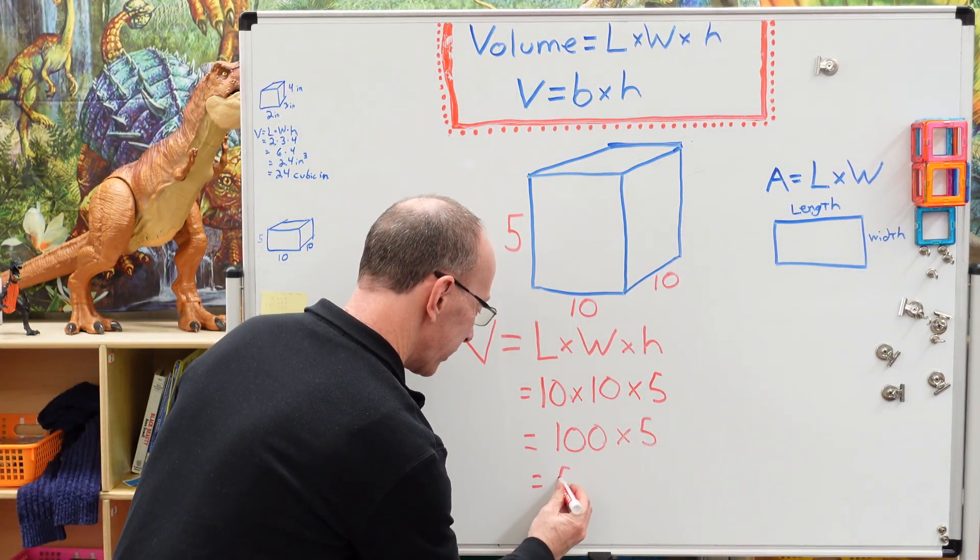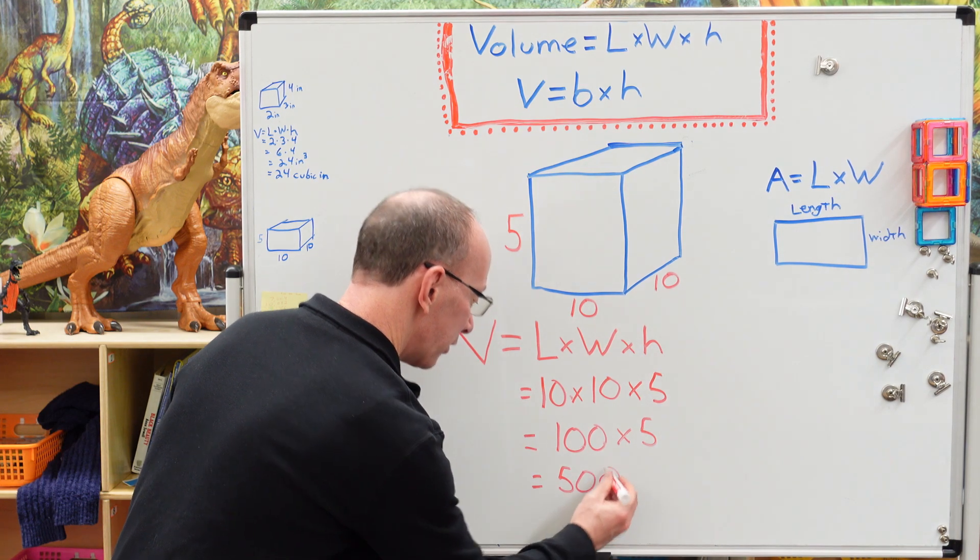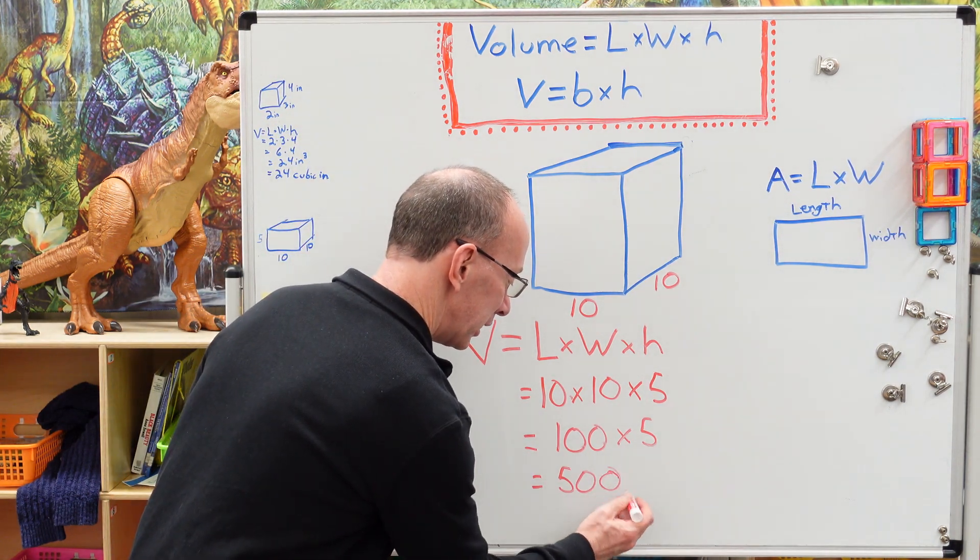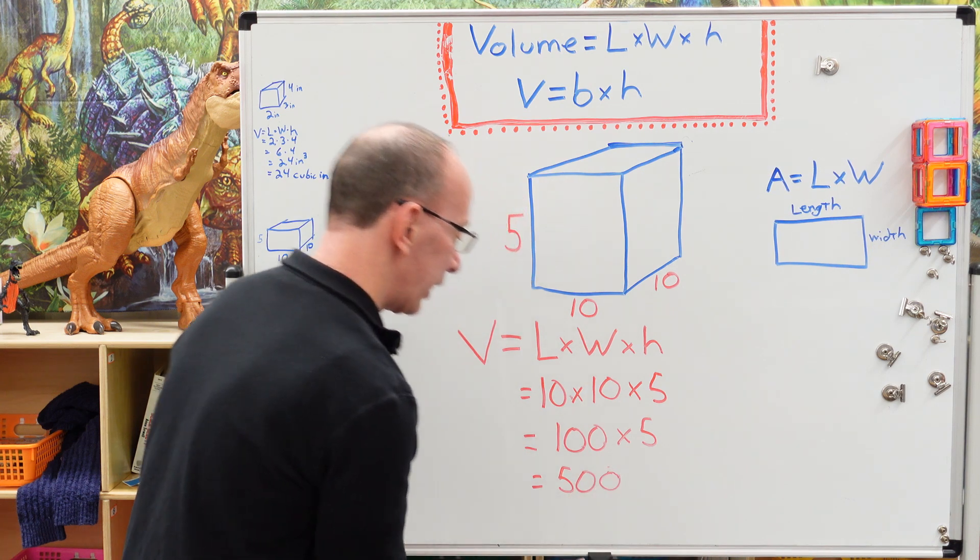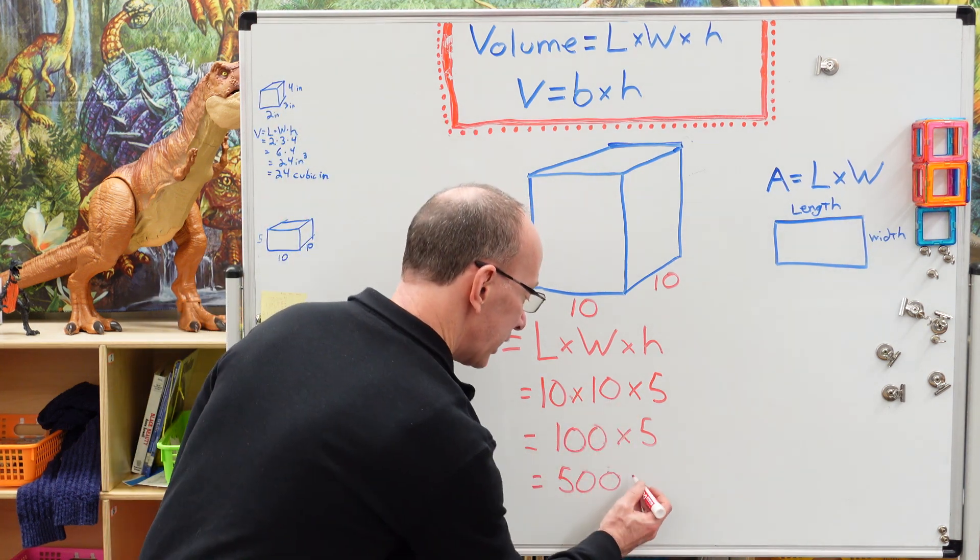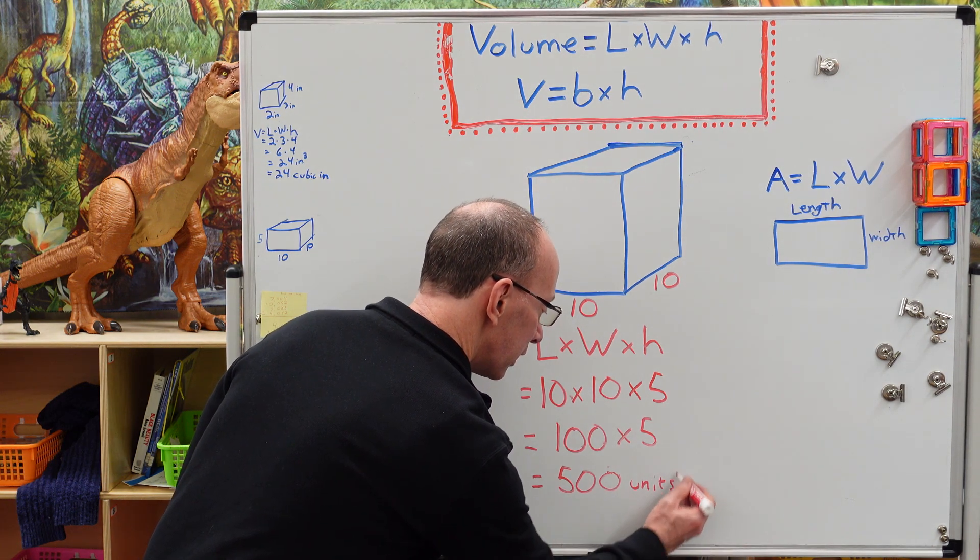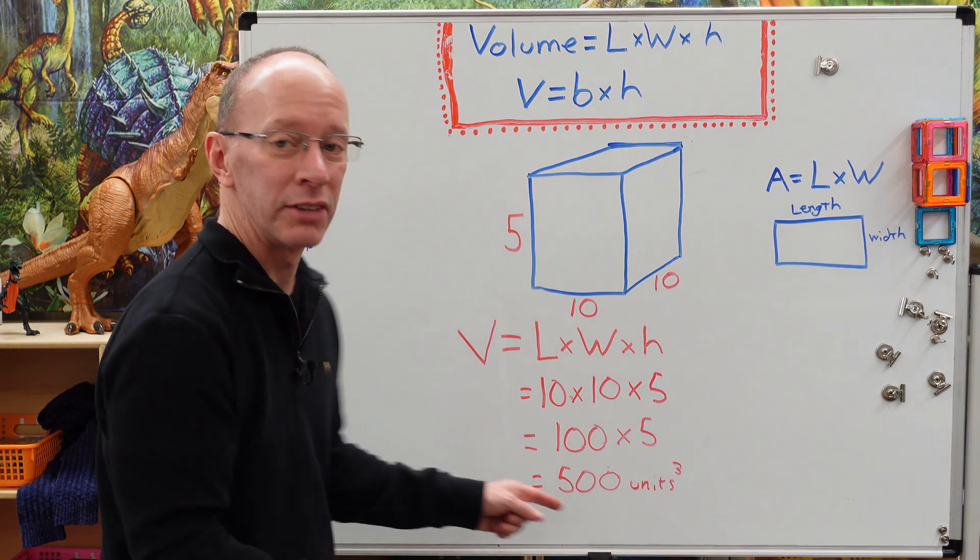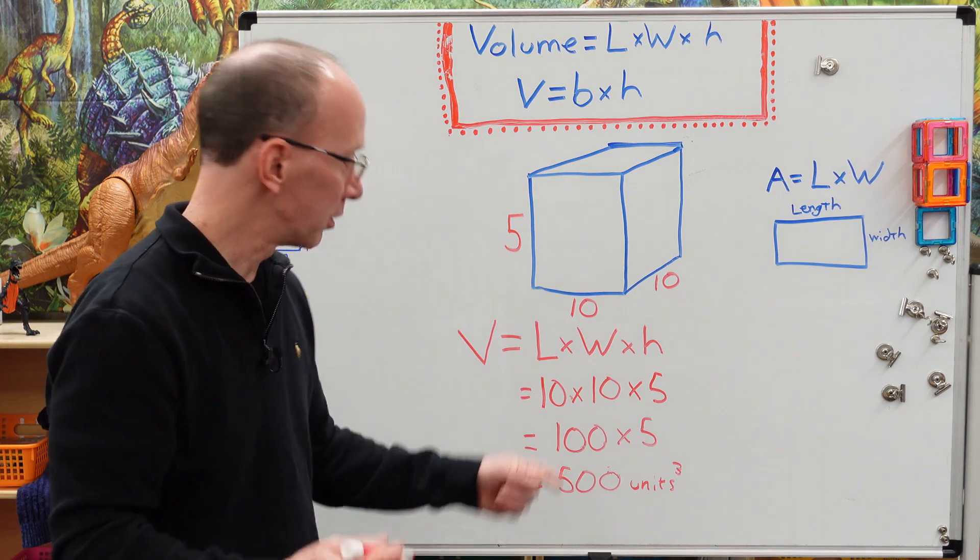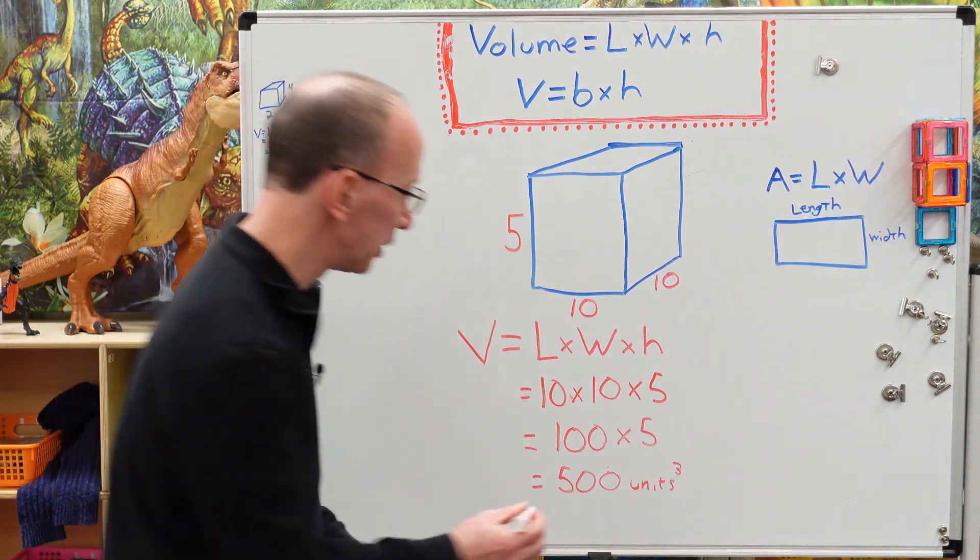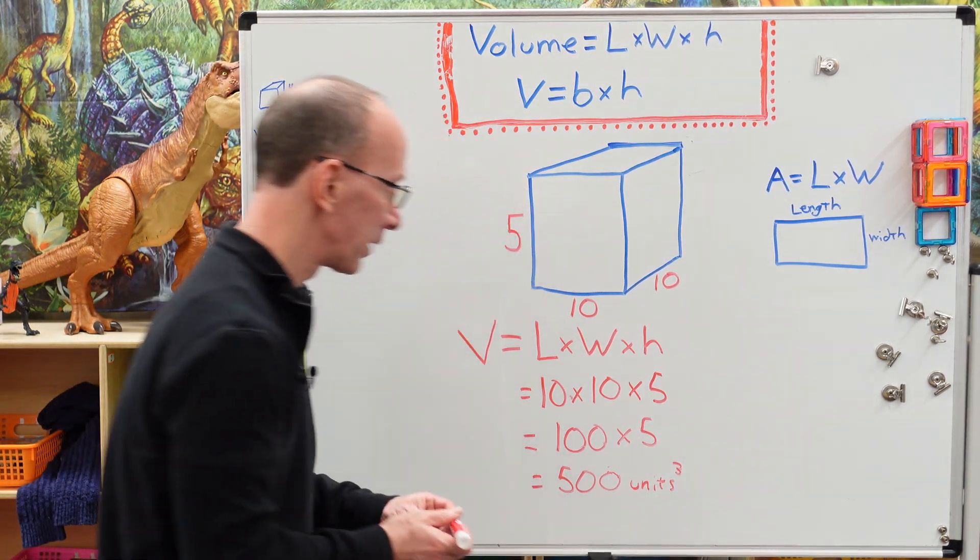All right. So I have 500. And whoops, I'm going to make sure to make that a little bit neater right there. And that is going to be cubic units. All right. So I'm going to go ahead and put units here and are three. Now, like I said, if you need to spell that out, you can go ahead and do that. I'm not sure what your teacher likes to have you do.